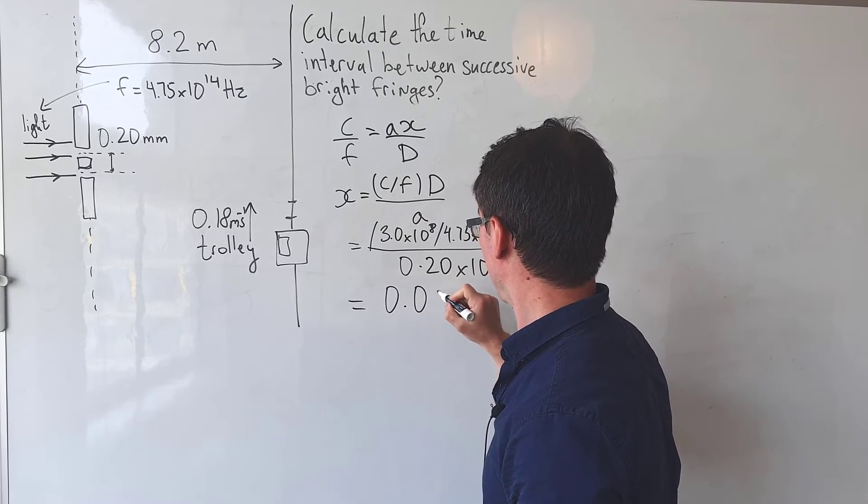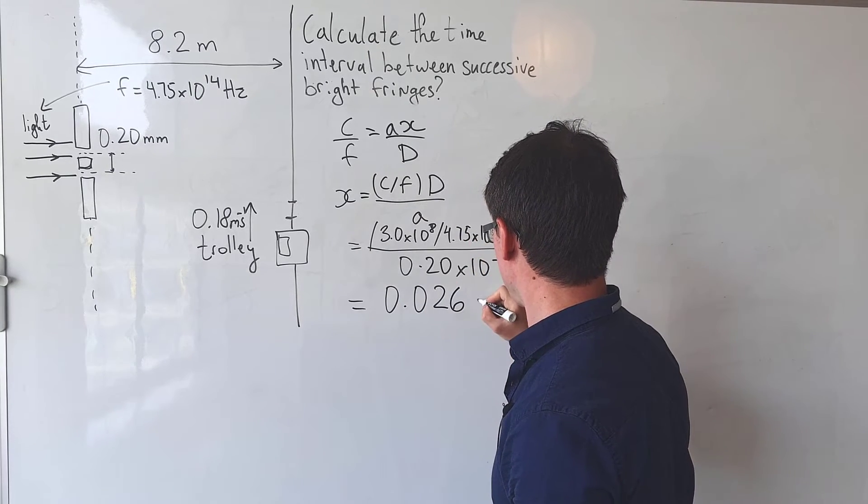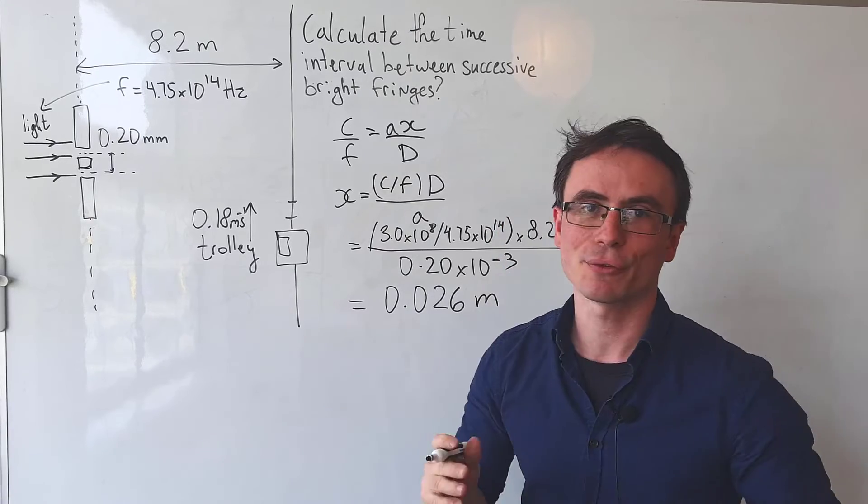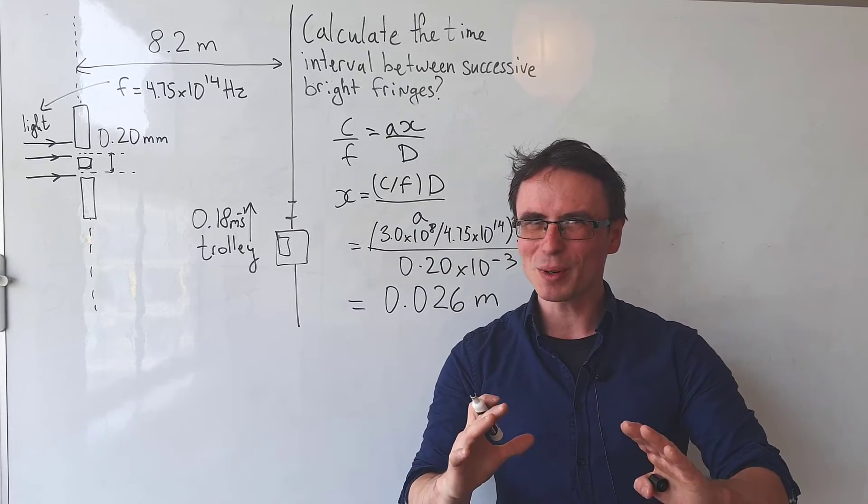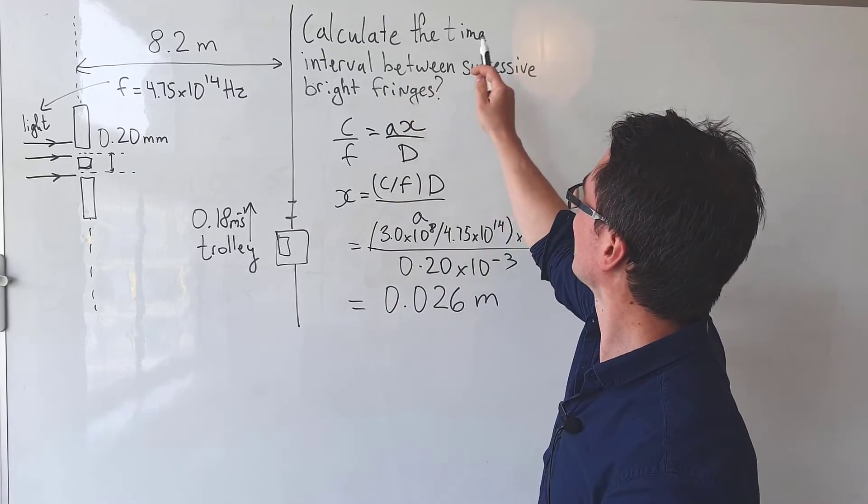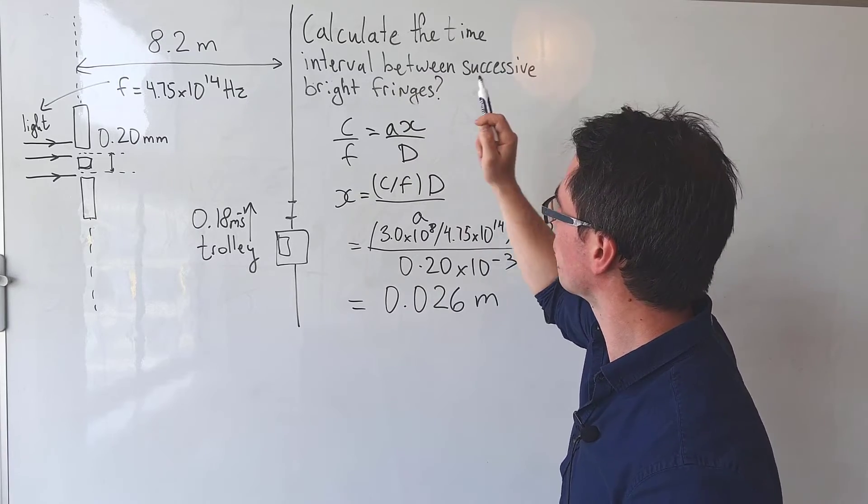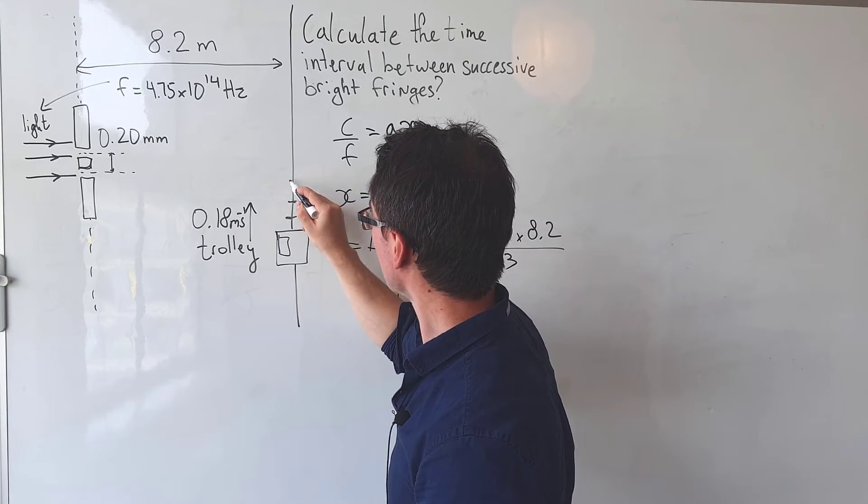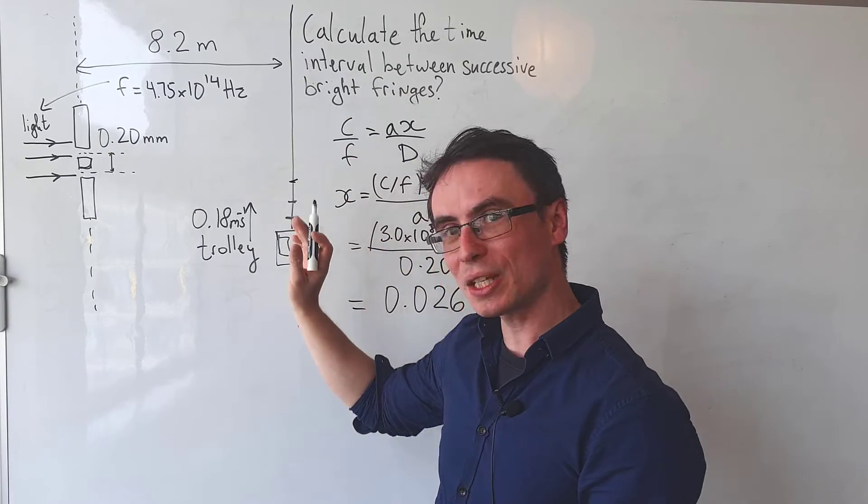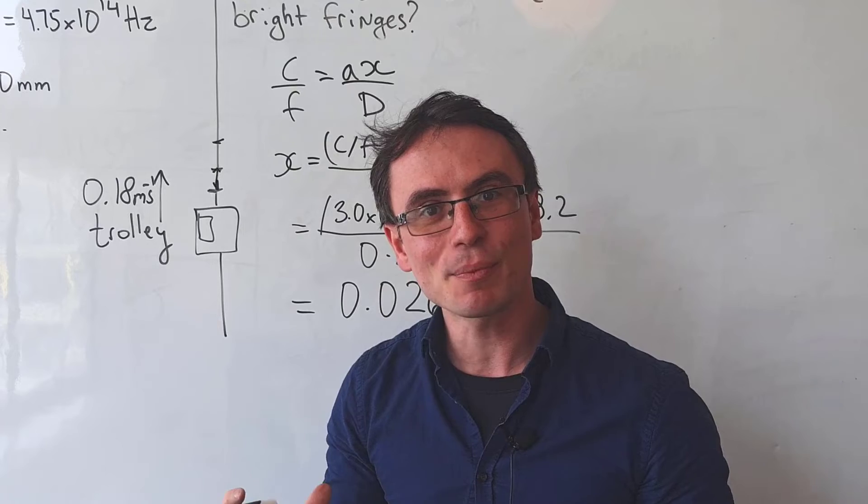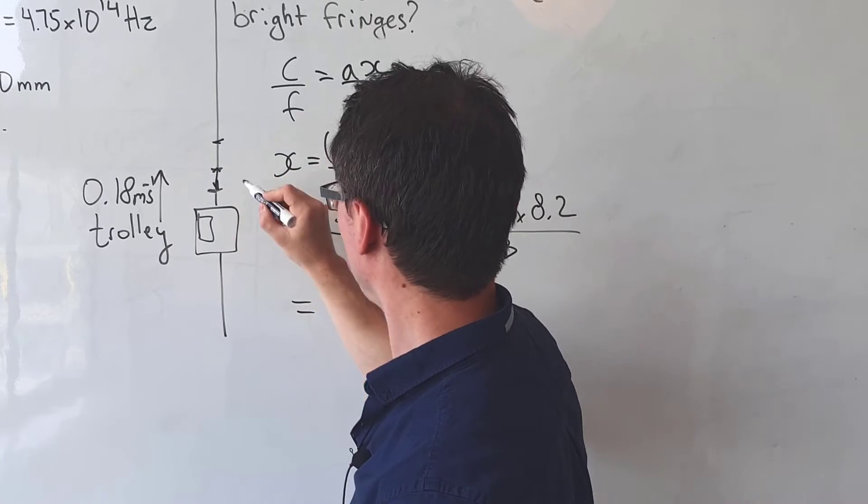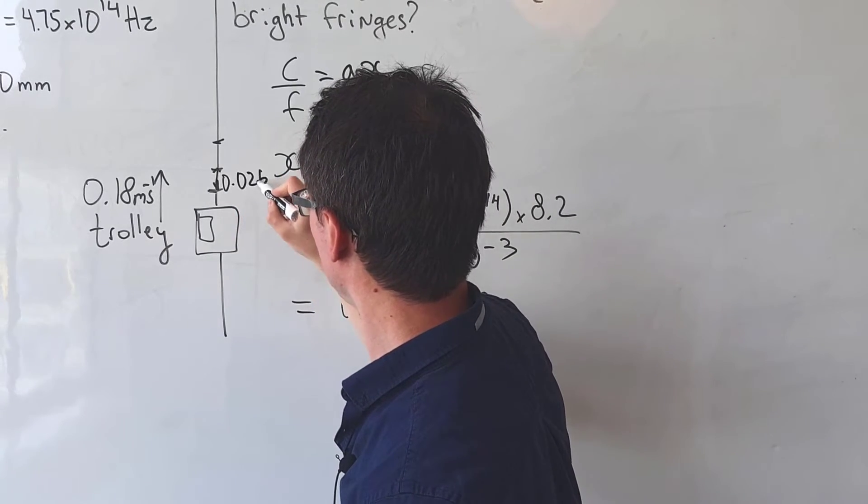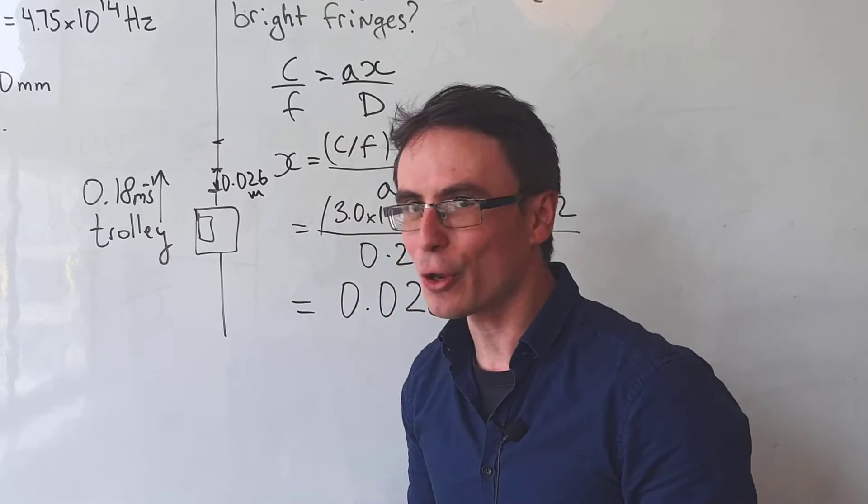This is not what the question is actually asking for. It's asking us for the time interval between successive bright fringes as measured by this trolley. So this trolley will be going through the fringes and successive bright fringes will be separated by this distance 0.026 meters.